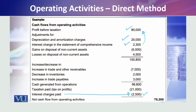Gain on disposal of a non-current asset is deducted because its cash flows are shown in investing activity — the cash received from selling the non-current asset goes there. If there is a loss on disposal of a non-current asset, it is added back, because it was deducted as an expense but there is no cash outflow against it.